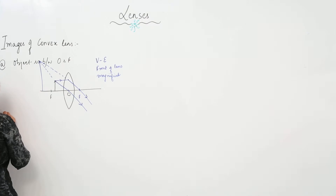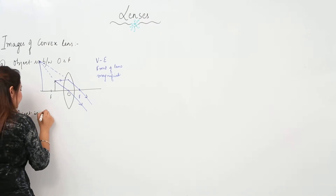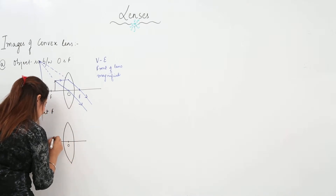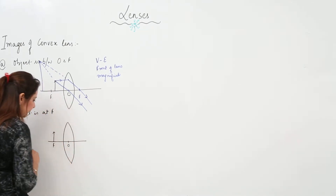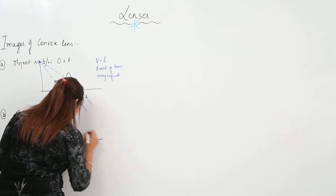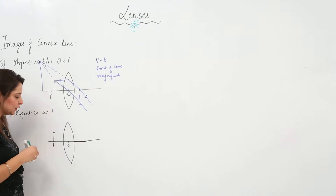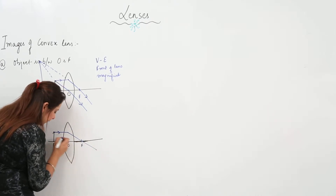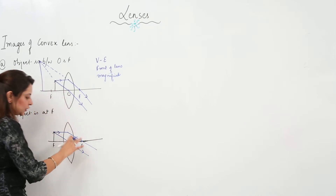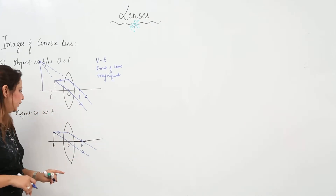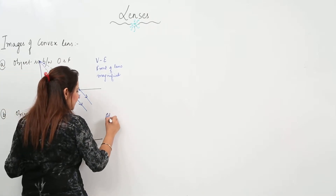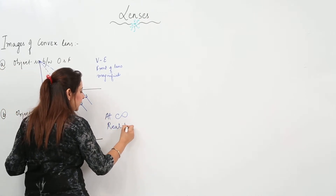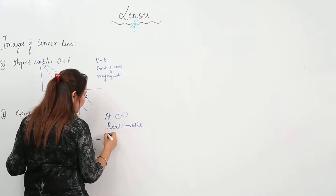The second case is when the object is at F. We have a convex lens with the object at F. A ray coming parallel after refraction passes through focus, and another ray going from the optical center passes straight. We see that these parallel rays are going to meet at infinity, so the image formed is at infinity — real, inverted, and highly magnified.